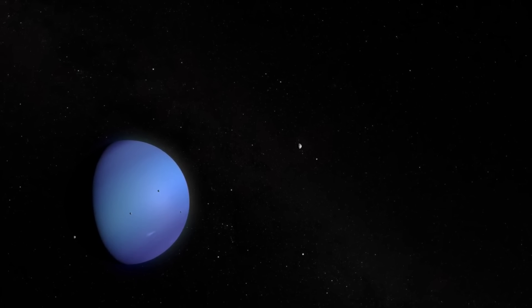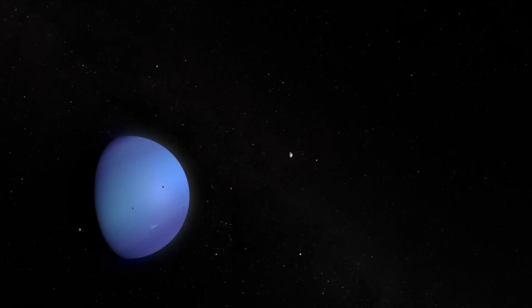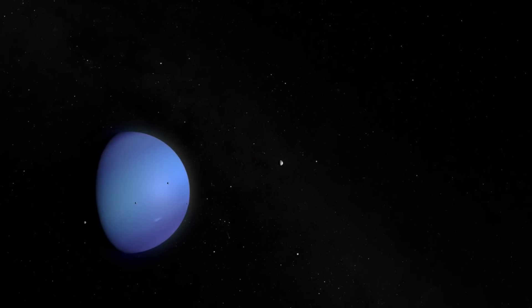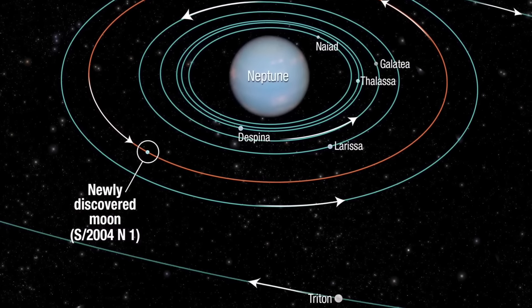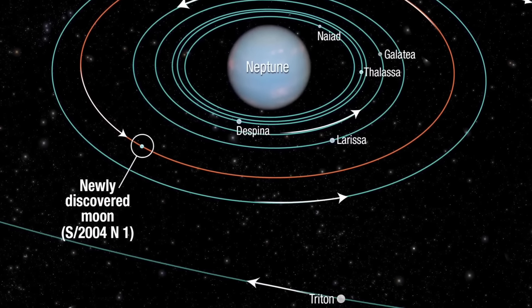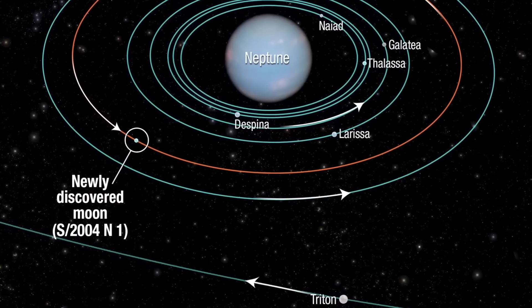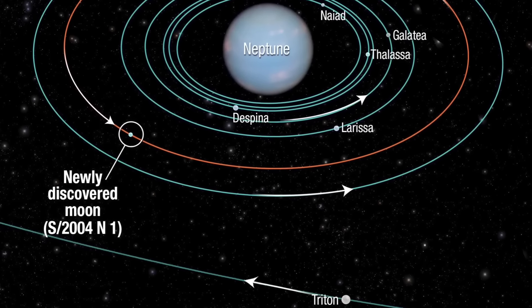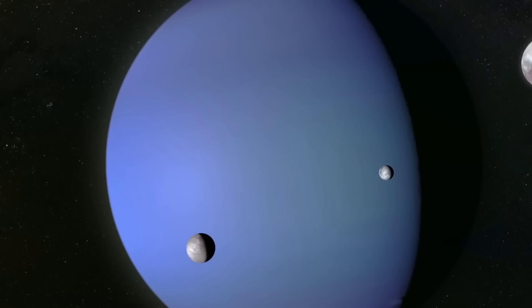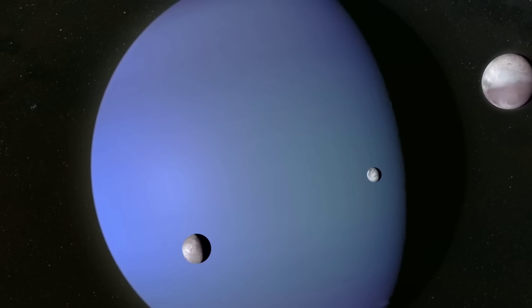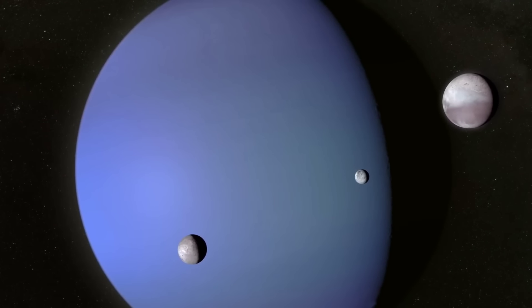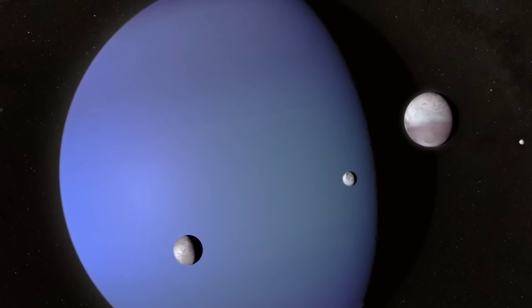Neptune's 164-year orbit means its northern pole at the top of this image is just out of view for astronomers, but the Webb images hint at an intriguing brightness in that area. A previously known vortex at the southern pole is evident in Webb's view, but for the first time, Webb has revealed a continuous band of high-latitude clouds surrounding it.